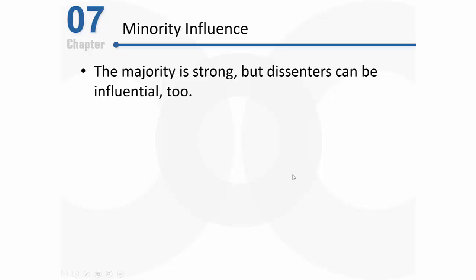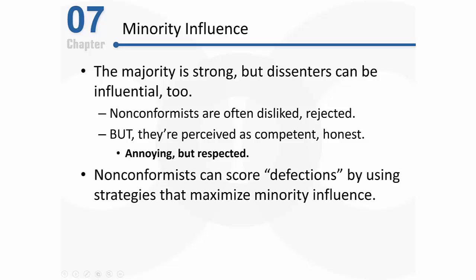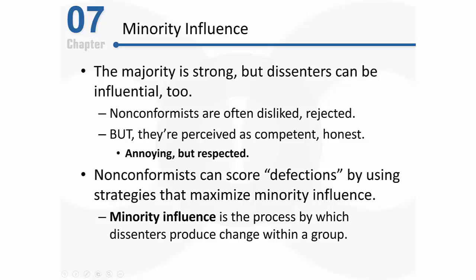Now let's switch gears and talk about minority influence. The majority is very strong, but dissenters can be influential as well. Dissenters are by definition non-conformists, and unfortunately they're often disliked and rejected by the majority. That said, they're often perceived as competent and honest because they're standing up for what they believe in — annoying but respected. Dissenters can score defections by getting people from the majority to cross over to their side using certain strategies that maximize their minority influence — the process by which dissenters produce change within their group.